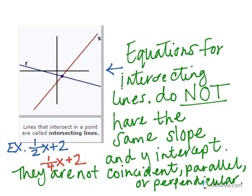They both do have the same y-intercept but they do not have the same slope, so they're not coincident and they're not perpendicular because they're not negative reciprocals of each other. So these two lines will eventually intersect.